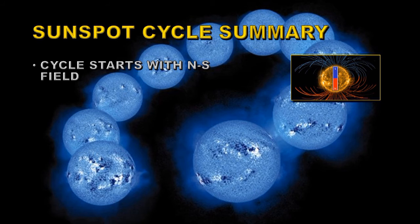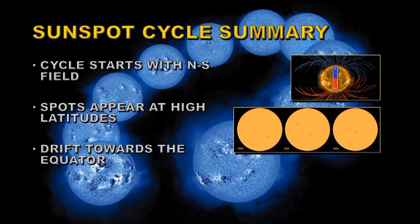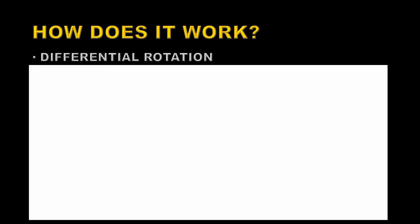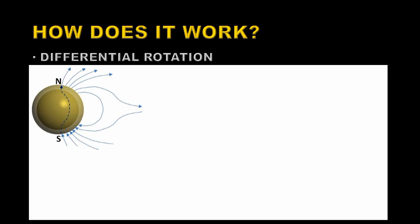That reversal explains why the magnetic cycle is 22 years. To summarize: the cycle starts with a north-south field; spots appear at high latitudes and drift toward the equator over the cycle; at the end, the sunspots disappear and the polarity is opposite to what it started with; then the process reverses again over 22 years to get back to the start. This all comes from differential rotation — the Sun rotates at different speeds at different latitudes.